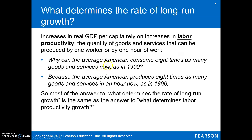Why can the average American consume eight times as many goods and services now compared to 1900? The answer is labor productivity — the quantity of goods and services that can be produced by one worker in one hour. A worker can produce more in a shorter amount of time, and this is really why real GDP grows over time.